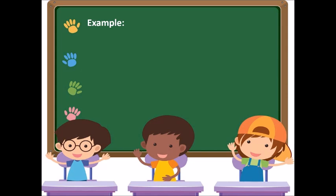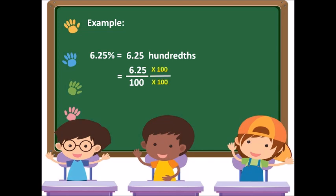Another example: 6.25%, or 6.25 hundredths, which is also written as 6.25 over 100. To remove the decimal point, we multiply both the numerator and denominator by 100, giving us 625 over 10,000. If we simplify this, the answer is 1 over 16.